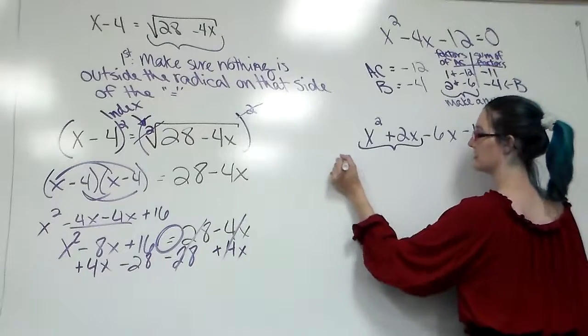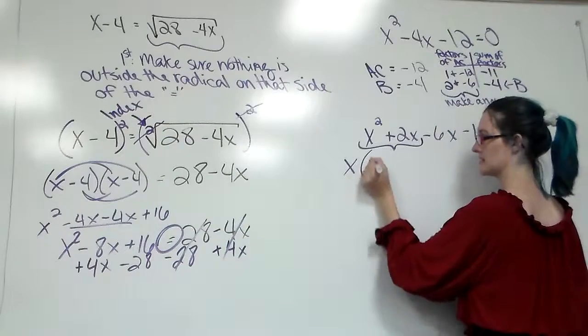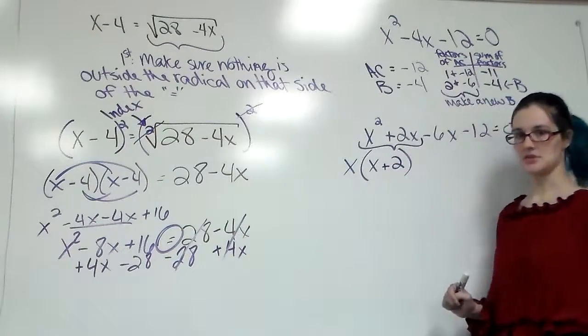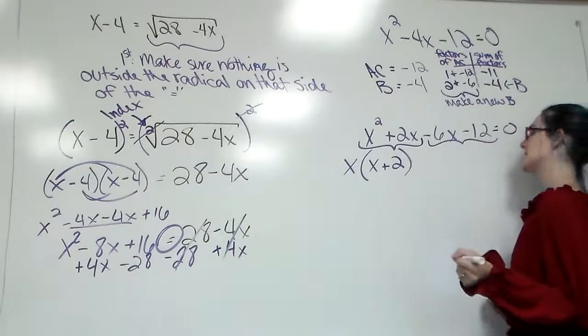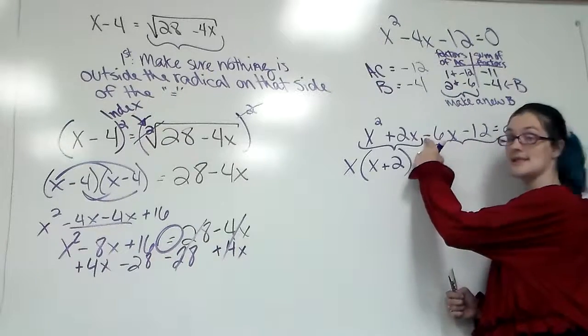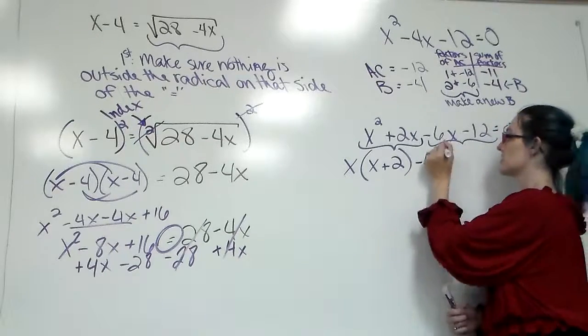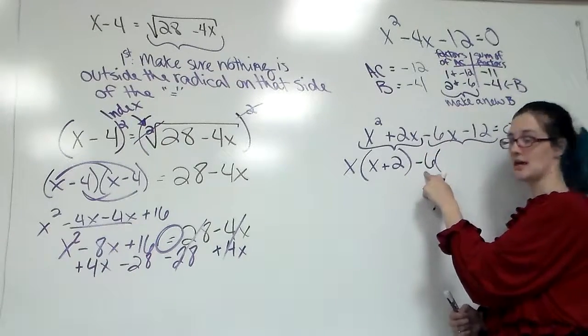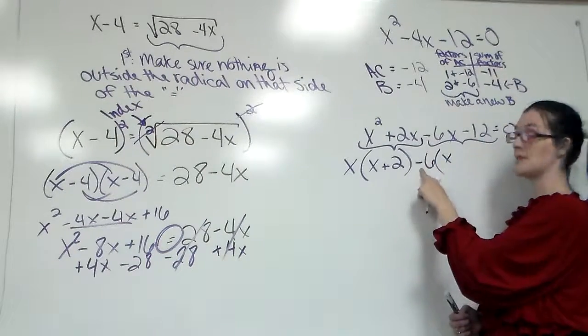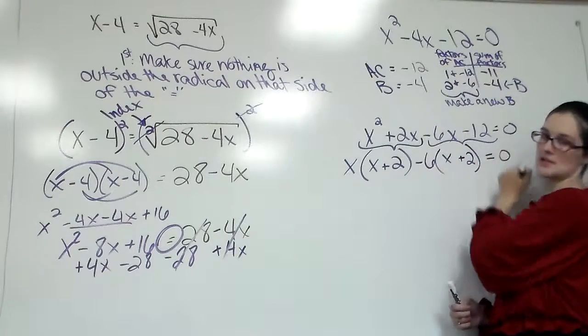Then we're going to factor by grouping. What's your GCF? GCF is x. x squared divided by x. Positive 2x divided by x. x plus 2. Negative 6x minus 12. GCF. 6 and 12 is 6. Always take the sign of the first number in that group. So I've got a negative 6. Open parentheses. Negative 6x divided by negative 6 is a positive x. Negative 12 divided by negative 6 is a positive 2. Don't lose your equal sign.